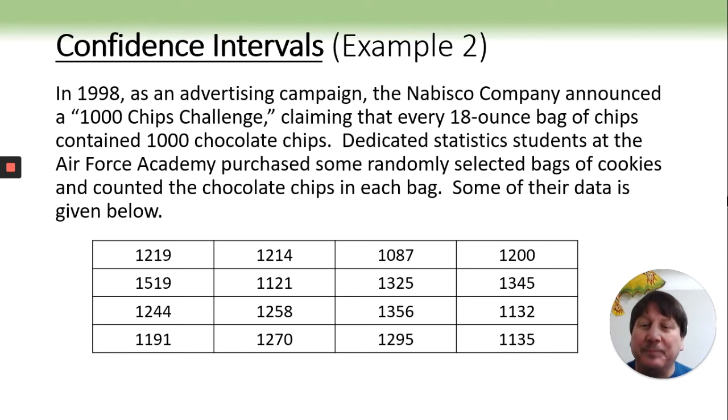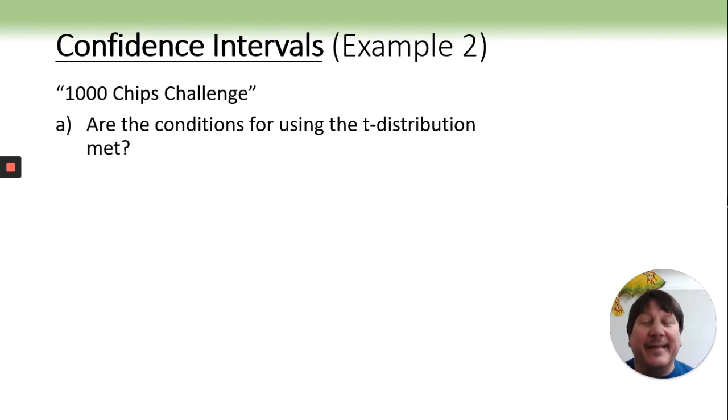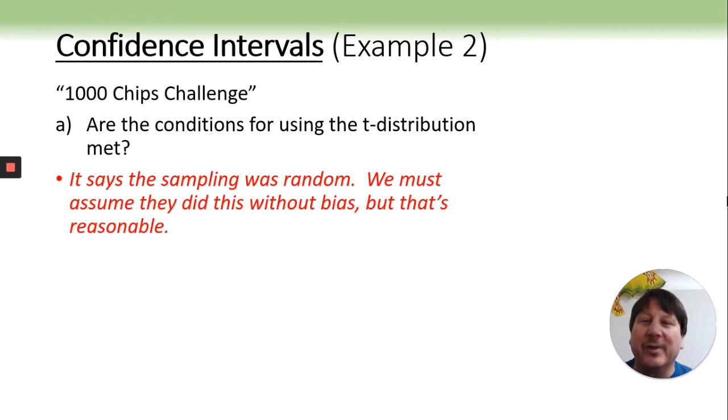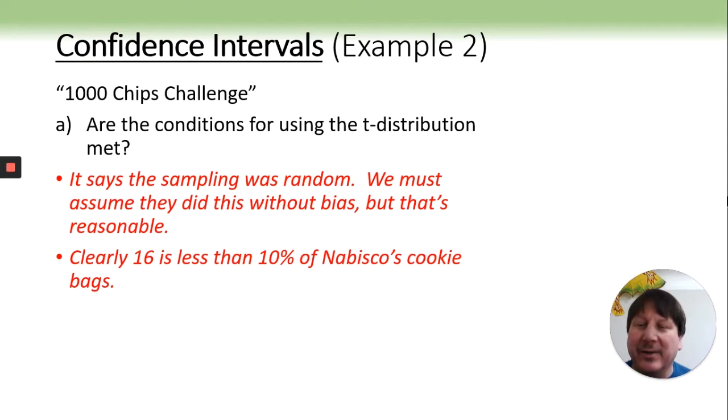To do this in a calculator, first you have to put the data in your calculator. Then we need to check to see whether or not we actually can use the T distribution. Now in example one, we didn't have enough information to check to see if it met the conditions, but on this one we do. It does say that they randomly sampled, so we have to kind of assume that they did. And 16 is certainly less than 10% of all Nabisco's cookie bags.